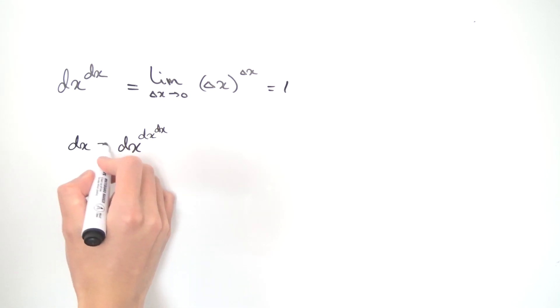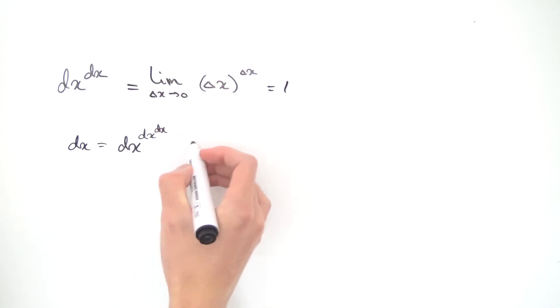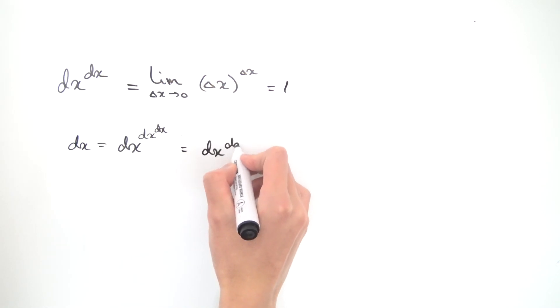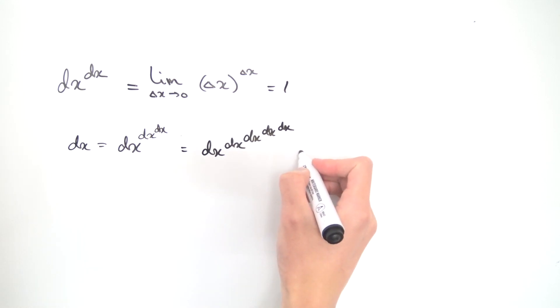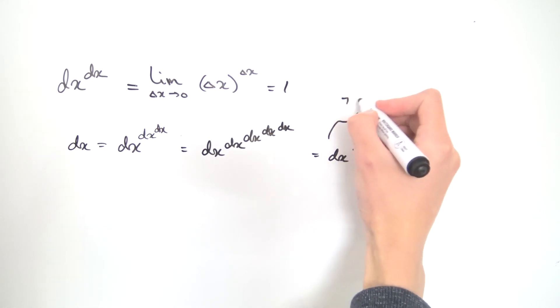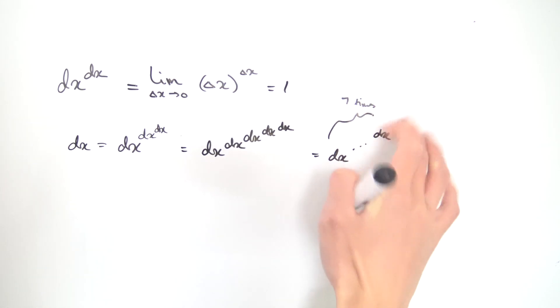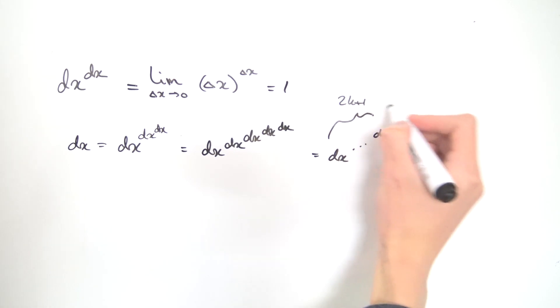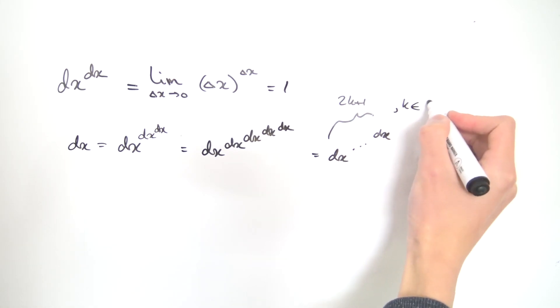Because notice this whole guy over here is dx. But notice dx is exactly this thing. So we can kind of put this guy inside of its own definition. And this becomes dx raised to the dx. But dx is this whole triple dx thing over here. So we get this. And this is where the infinite tower comes from. But notice there's always an odd number of dx. So it could have dx dot dot dot dx. But this happens over here seven times. Or in general, you would want it to happen 2k plus one times, where k is a natural number. And of course you can include zero as well.